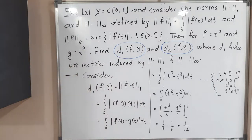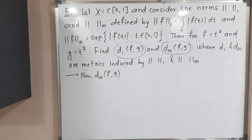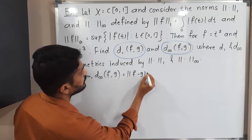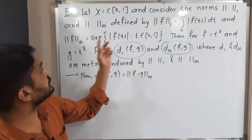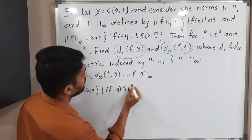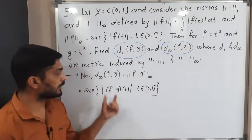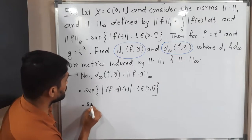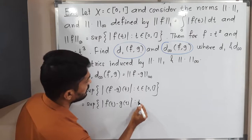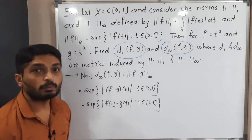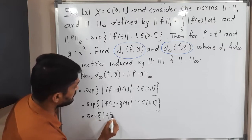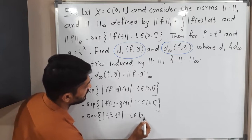Now let us find D∞(f,g). D∞ is a metric induced by norm infinity, so its definition is ‖f − g‖∞. Following the definition of norm infinity, this equals the supremum of |f(t) − g(t)| for t in [0,1], which is the supremum of |t² − t³| for t in [0,1].